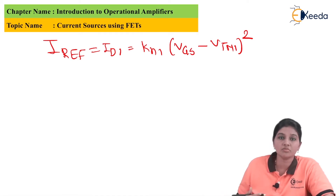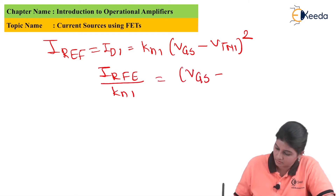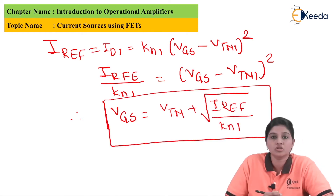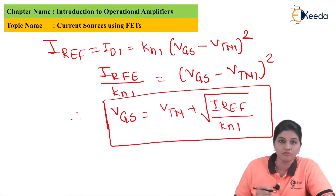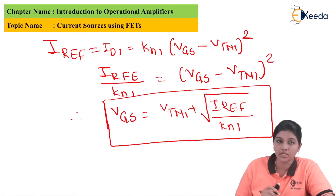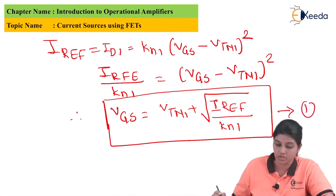The same equation can be rearranged to obtain the value of VGS. VGS = VTN1 + sqrt(I_reference / KN1). Let's call this Equation 1.